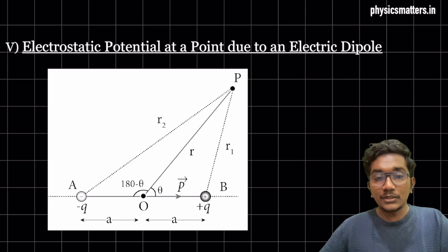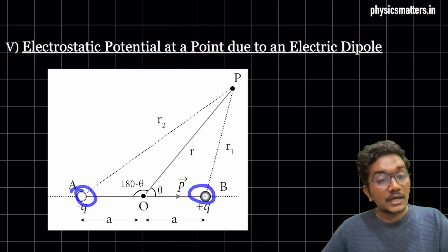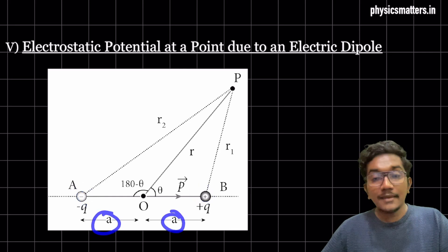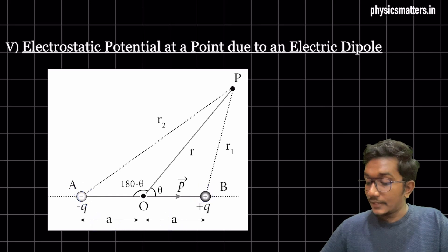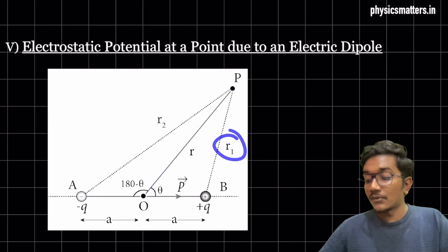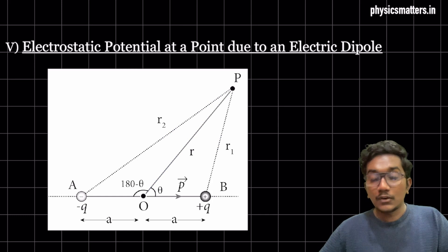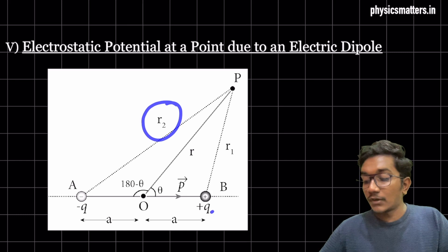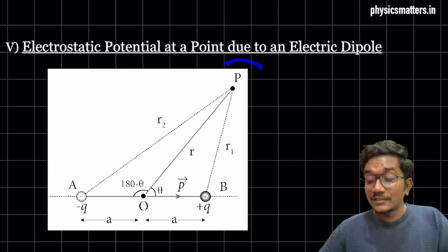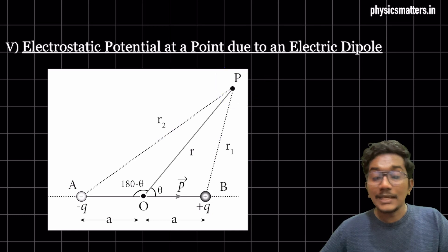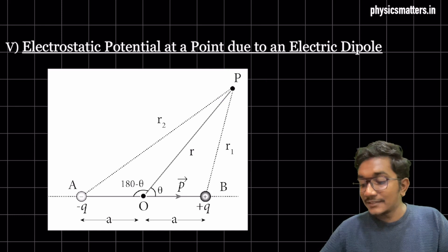Let me give a brief introduction about the diagram. We have minus q and plus q — our dipole — with half-length a on each side, total 2a. The distance from the center O to point P is r, while r1 is the distance from plus q to P, and r2 is the distance from minus q to P. Point P is at a distance r from O and makes an angle theta with the dipole moment direction.